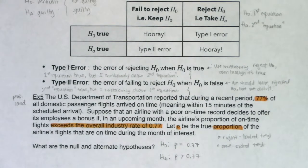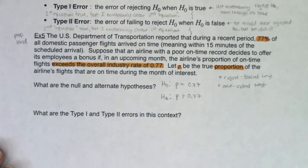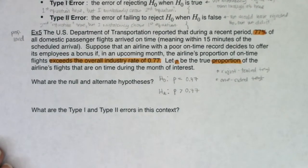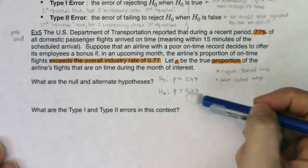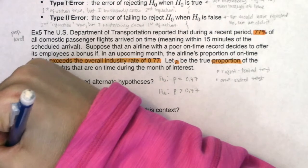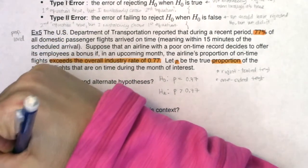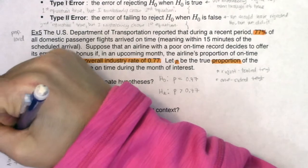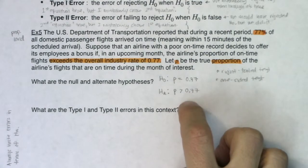Now we need to figure out what the Type 1 and Type 2 errors mean in the context of this question. When writing up errors, you always want to write them in terms of the alternate — I'll note: always write errors in terms of H_A. The burden of proof falls on the alternate; we get to assume the null is true.